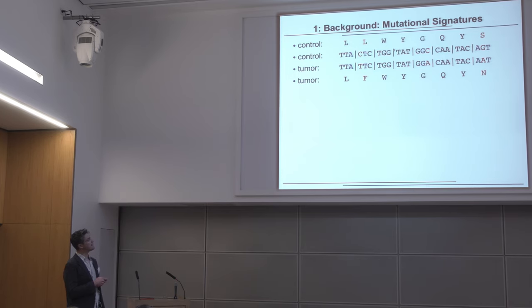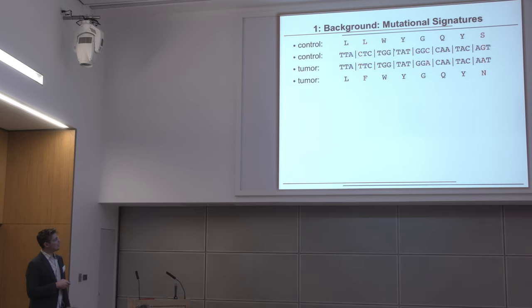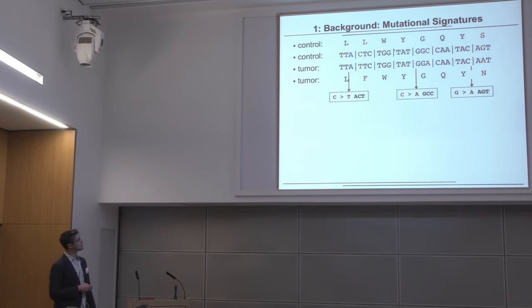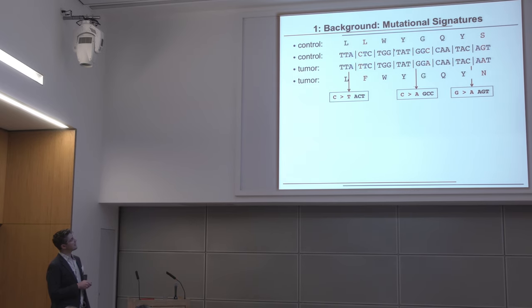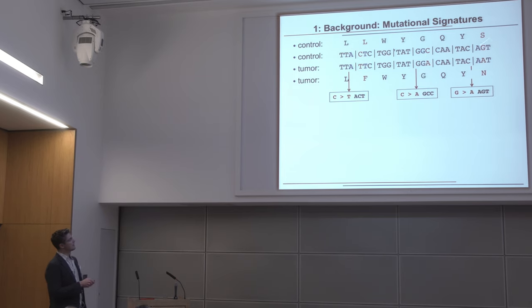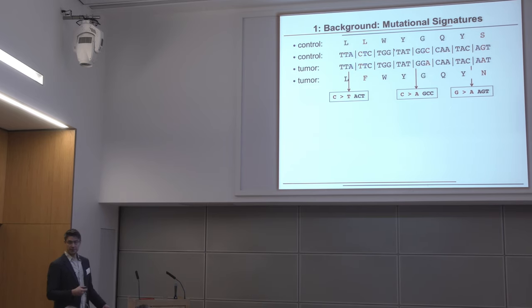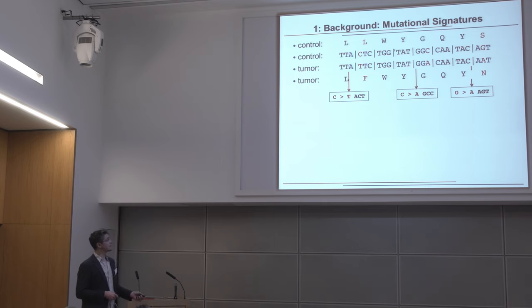We call these different things 'features.' For example, here we have a C-to-T exchange in an ACT context, a C-to-A exchange in a GCC context, and a G-to-A in an AGT context. The same nucleotide exchange could be a different feature depending on the motif context it lies in. We then build a vector for every sample, labeling the nucleotide exchange and the motif context.